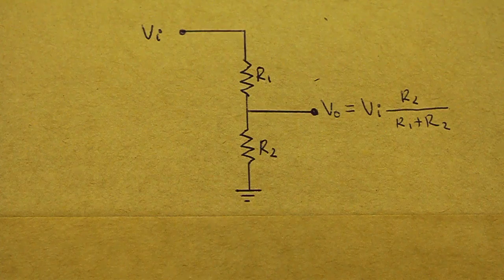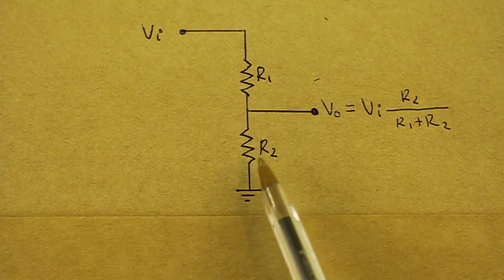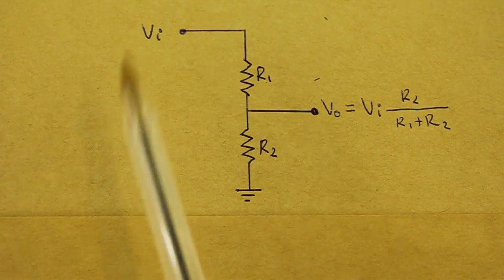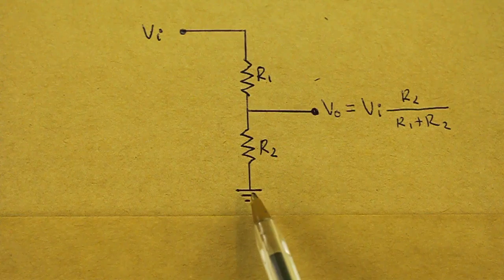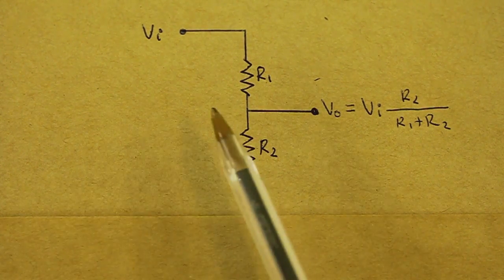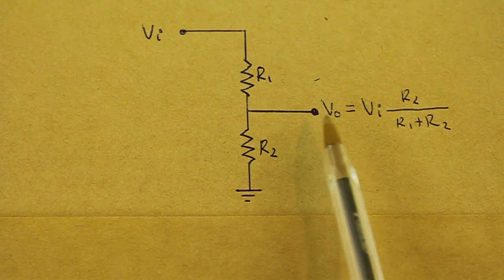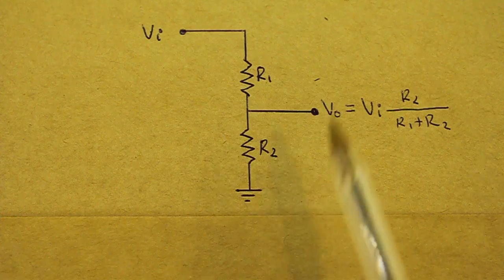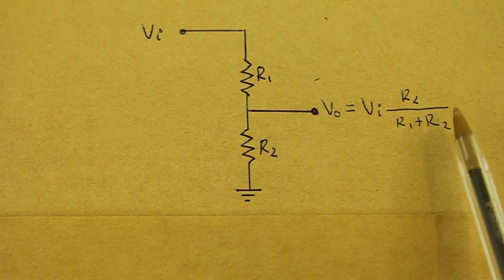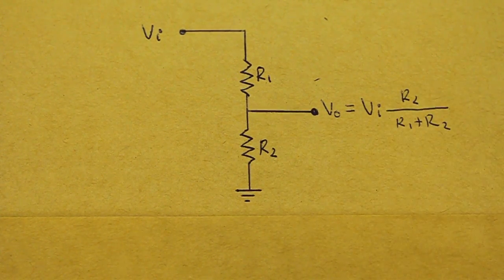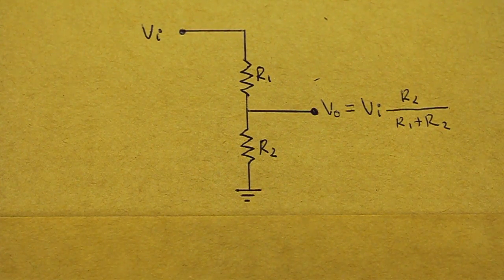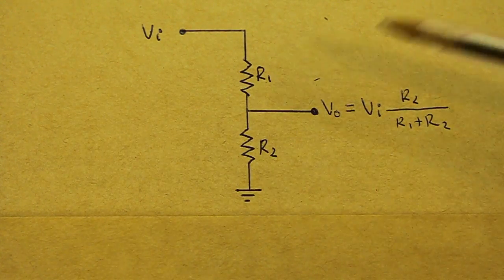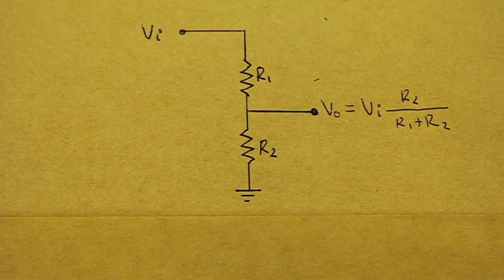Here is the voltage divider. It is just two resistors in series. We apply voltage at the input and here we have the ground or negative connection. In these circumstances, the voltage at the output is this value. It is our input voltage multiplied by the ratio of the resistors in this way. So we can divide the applied voltage in any fraction that we want.